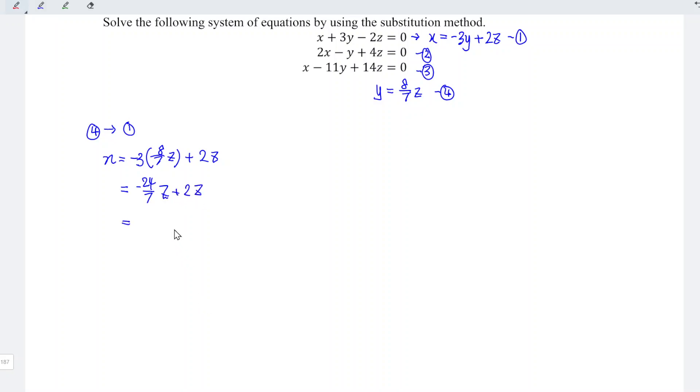To calculate this, we can first standardize the denominator. Since the denominator of the first term is 7, I'm going to times 7 over 7. So which means that we have minus 24 plus 2 times 7 which is 14, divided by 7 times z.